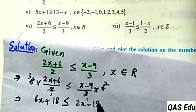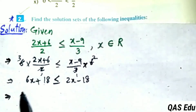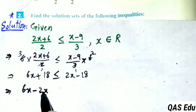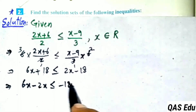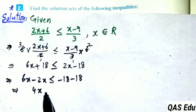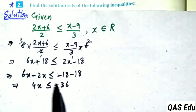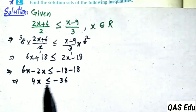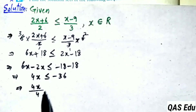...multiplying the right side: 2 nines are 18. Bringing 2x to the left: 6x minus 2x, and moving 18 to the right: minus 18. So 4x is less than or equal to minus 18 minus 18, which gives minus 36. Then also 2x minus 6 on the right. Combining: 4x is less than or equal to minus 36.